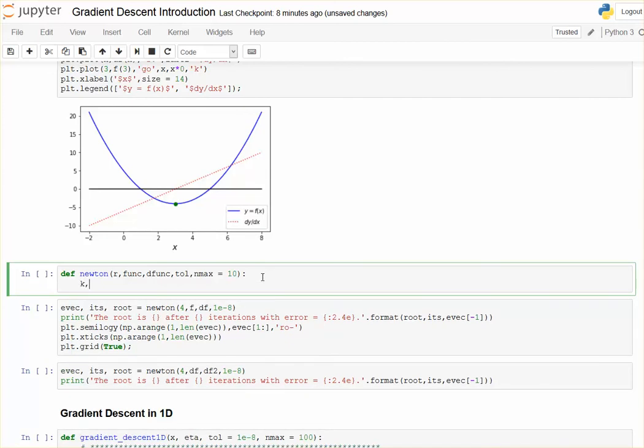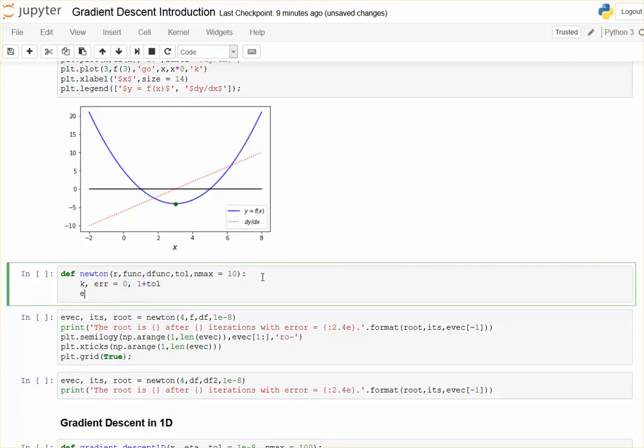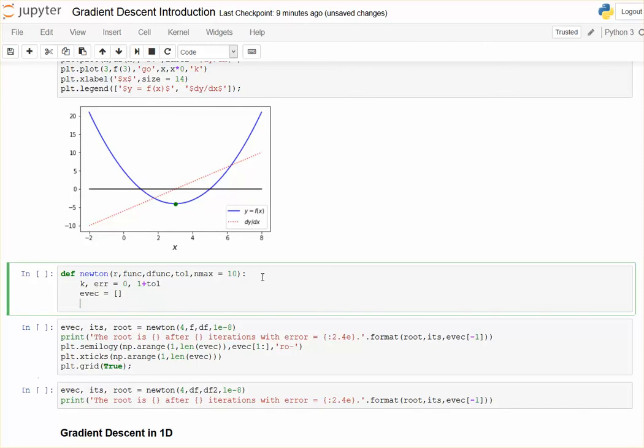And then let's initialize my iteration and my iteration error, actually. And I'll start at zero. And then I want this, I want Newton's, I want the while loop I'm going to create to fail. So I'm going to make it some immense number, like one, and maybe I'll just add the tolerance to that. I'm going to store my iteration errors in an array. Let's start the algorithm.